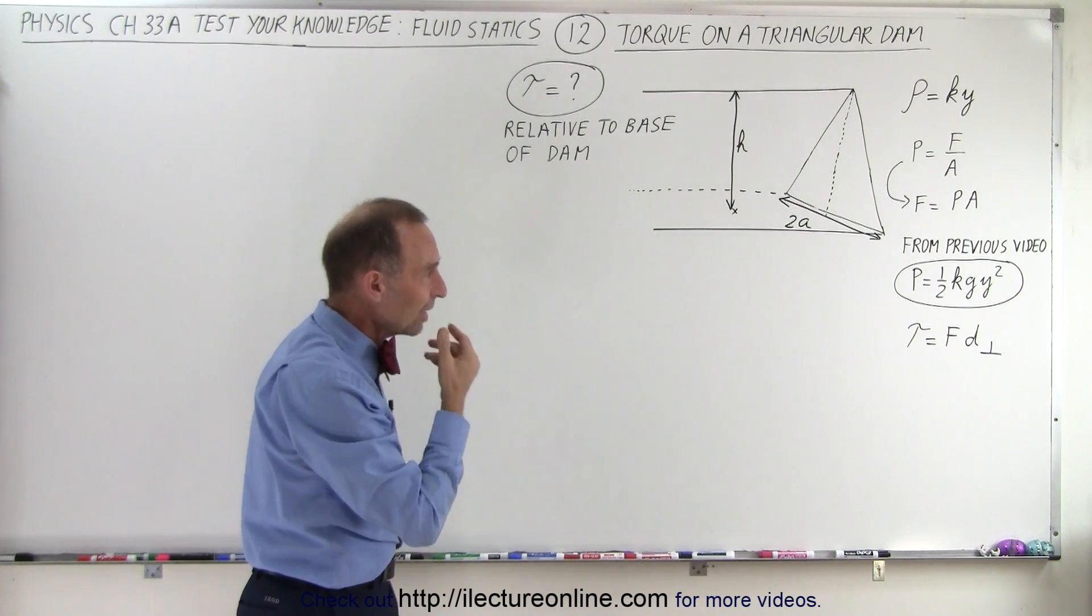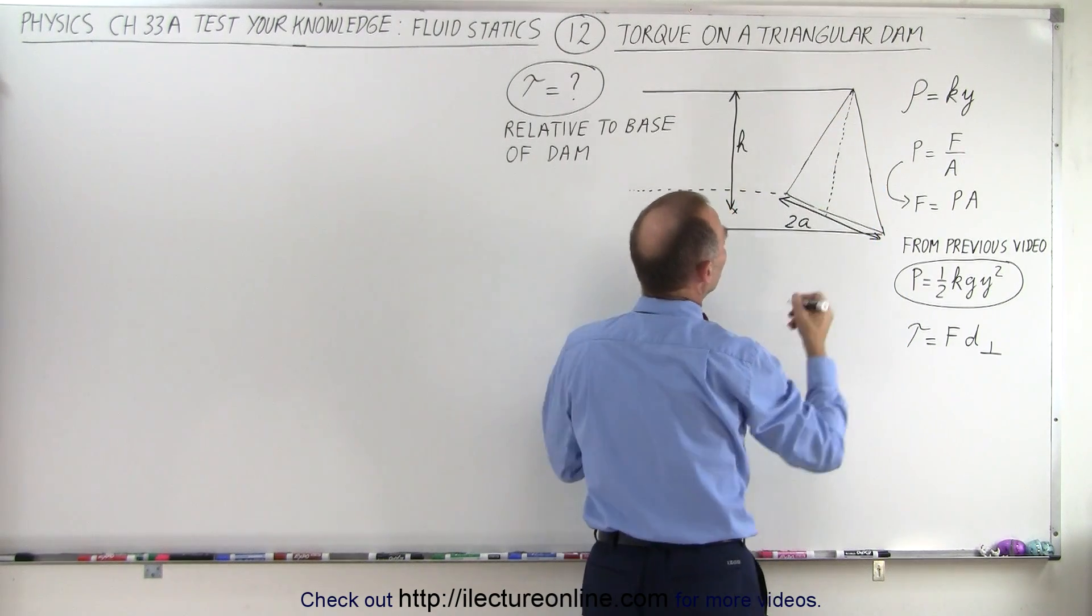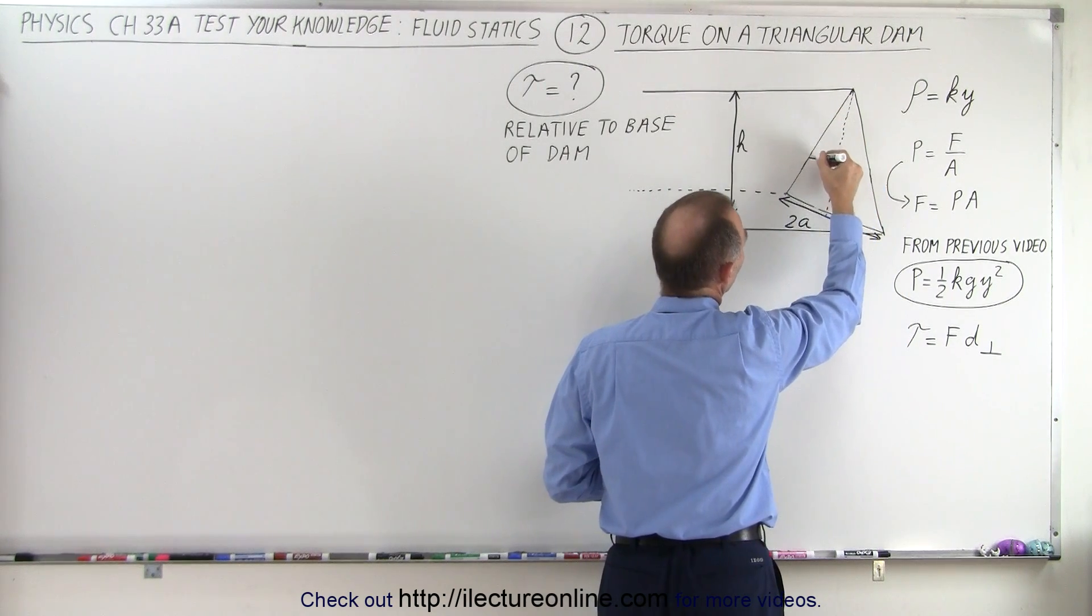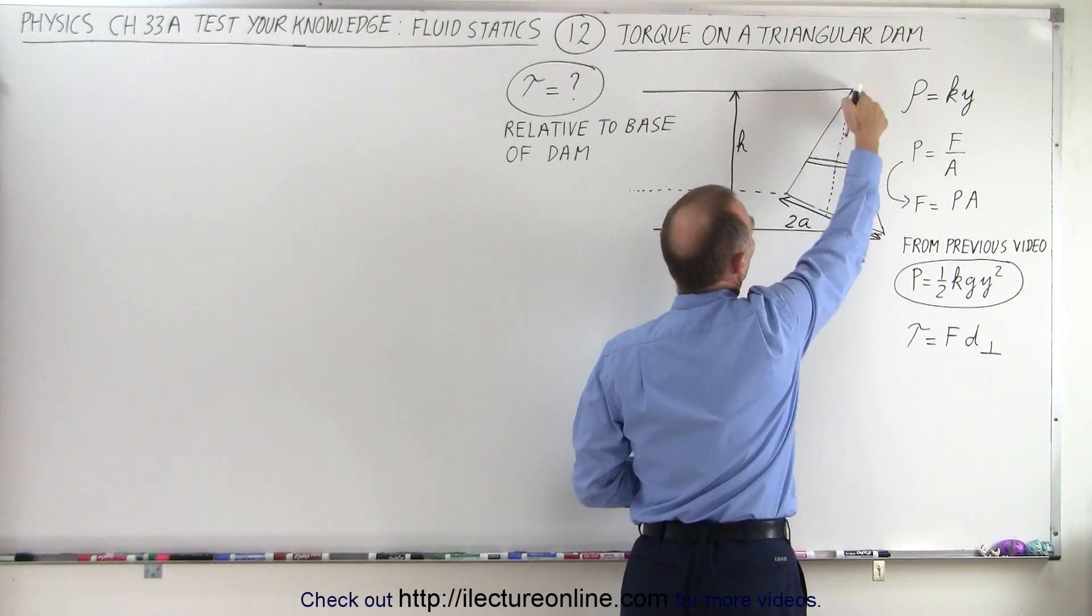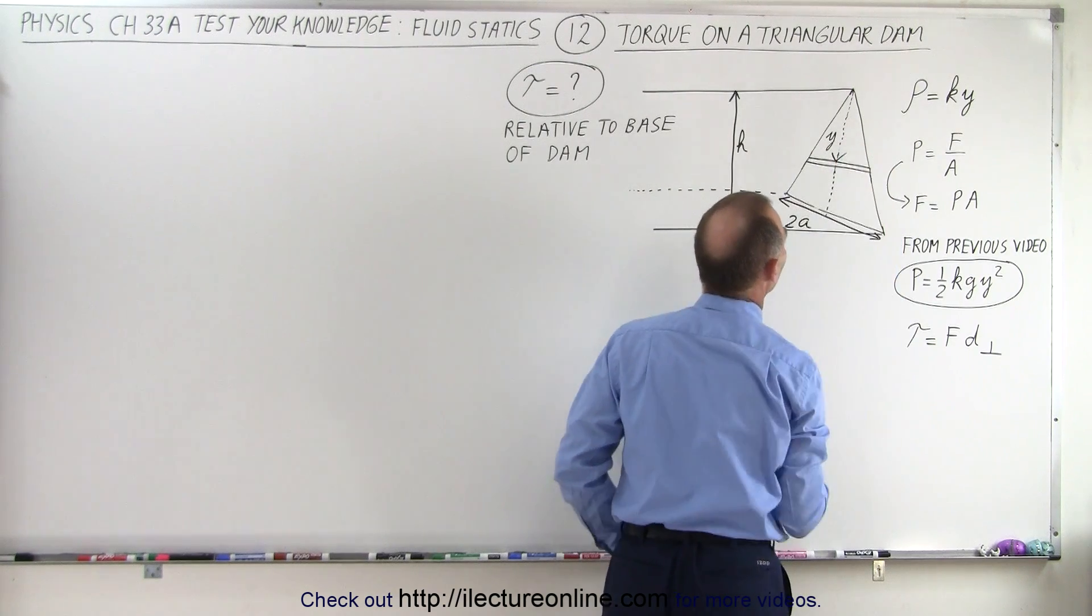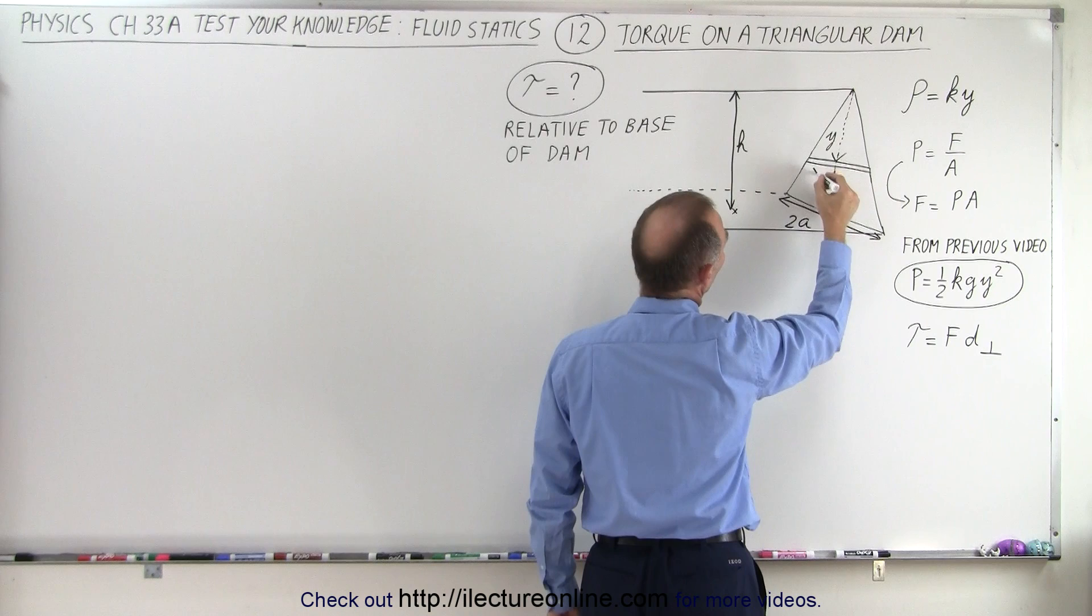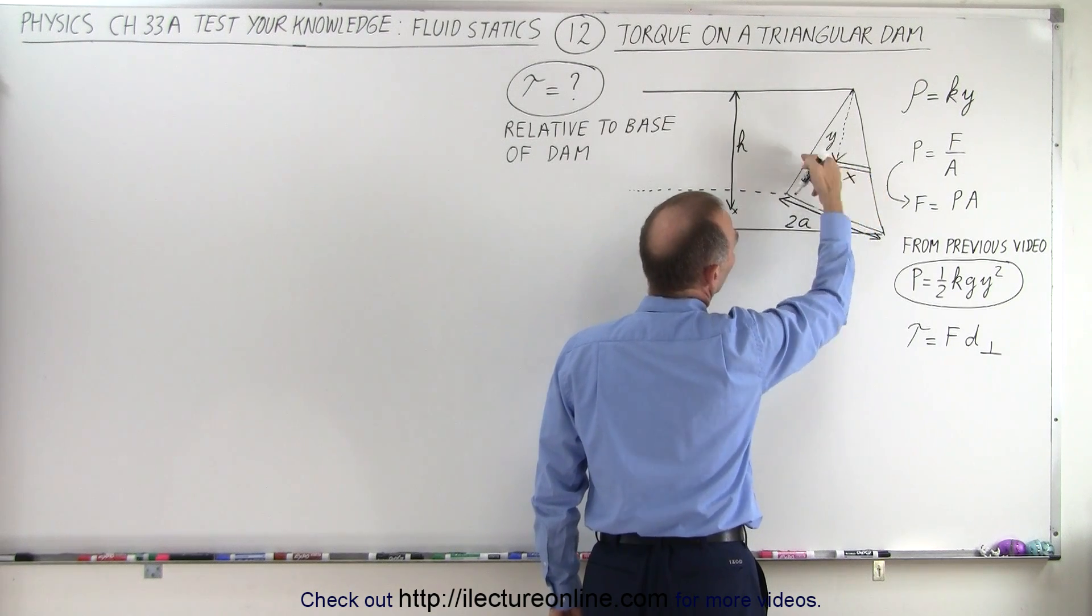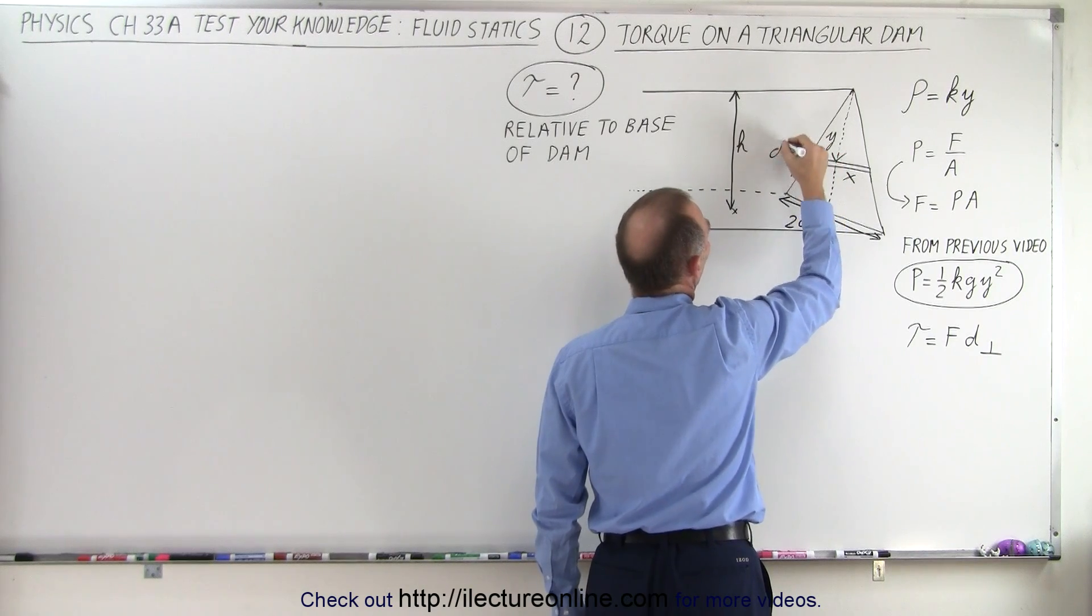Well, the best way to think about it is that torque is force times distance, but since the force increases, what we can do is take a small little strip here. Take a small little strip where the depth from there to there is equal to y, so that would be equal to y from there to there, and then the width, let's call from here to here x, so then the width of the strip is 2x, and the height of the strip would be equal to a dy.